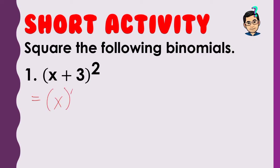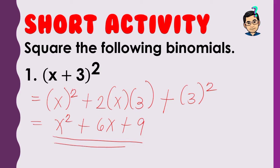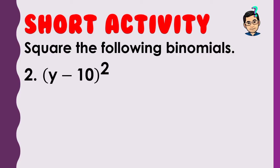Square the first term — that is x squared. Next, twice the product of the first term and the second term: the first term is x and the second term is 3. Then finally, square the last term: 3 squared. So x times x is x squared, plus 2 times x times 3 is 6x, and 3 squared is 9. Therefore, (x + 3)² = x² + 6x + 9.